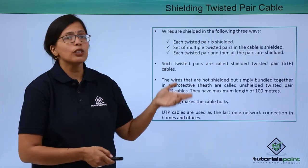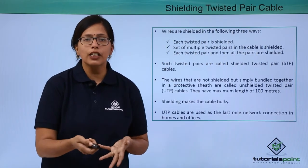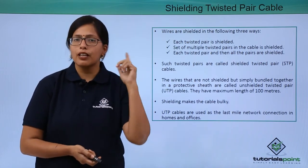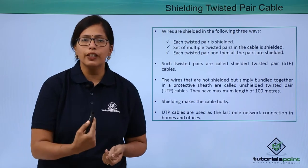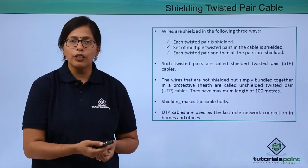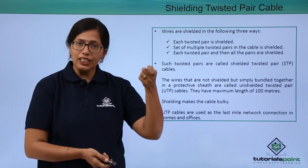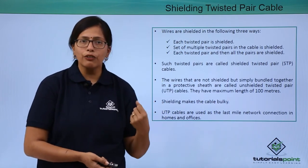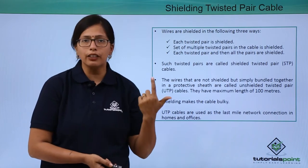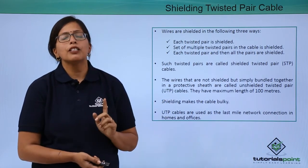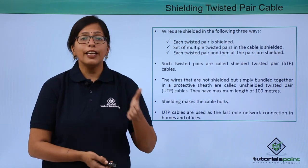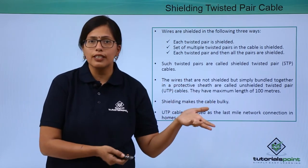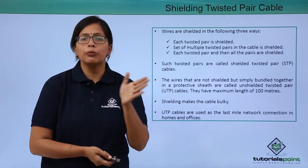So what are we doing to counter these disadvantages? We are shielding the twisted pair cable. We learnt in the previous video that pairs of copper wires are twisted together. What we can do is shield each copper wire with a cladding, or we can have a pair of wires and shield them together. When we shield them, it is called shielded twisted pair cable. They have the advantage of transferring data over long distances without needing repeaters.